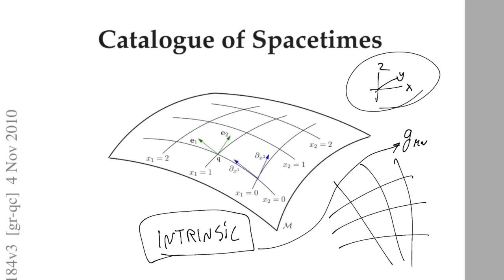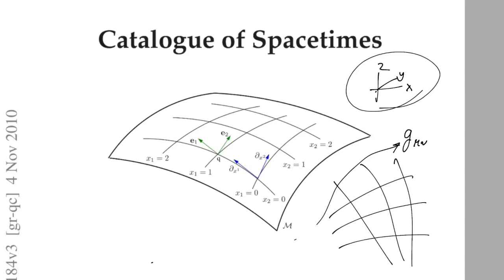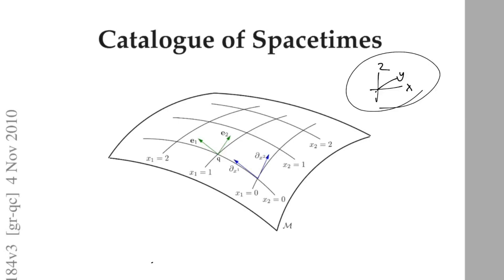The curvature is intrinsic to the surface — it's built into the metric structure of the space itself and has no dependence on embedding in a higher-dimensional space. In fact, if the manifold were the surface of a Klein bottle, you couldn't even embed it in a one-dimensionally higher space. Yet the Klein bottle is still a manifold — it can still have a metric and still have intrinsic curvature.